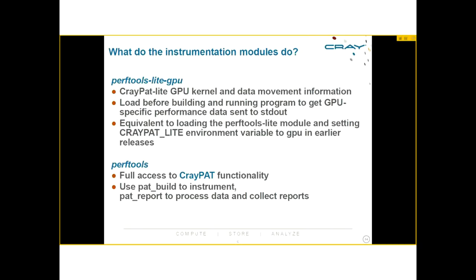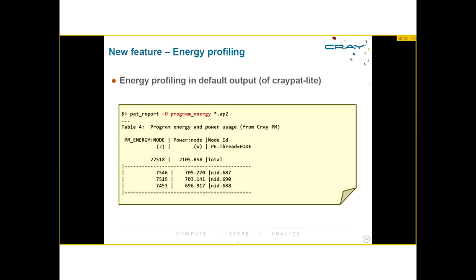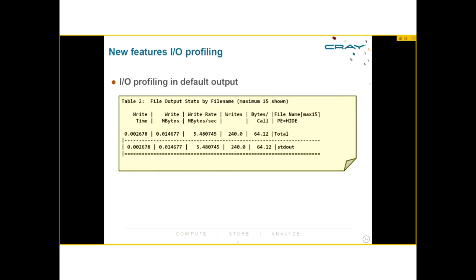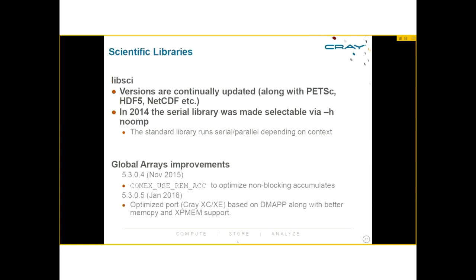For anyone starting out, just loading perf_tools_lite, recompiling, and running to see what you get is recommended. One new feature: ALPS now collects energy information about your application, so a Cray PAT-lite experiment gives you energy consumption — minimum, maximum, and average across nodes. You also get an I/O profile by default, giving a quick look at what I/O your application is producing. The new module setup is a significant change — be aware of it.